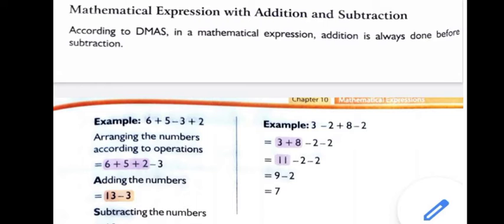Look at the second example. Negative 2 plus 8 minus 2. First addition term. So plus 8 comes forward. So 3 plus 8 minus 2 minus 2. 3 plus 8, 11. 11 minus 2 minus 2. 11 minus 2, 9. 9 minus 2, 7.